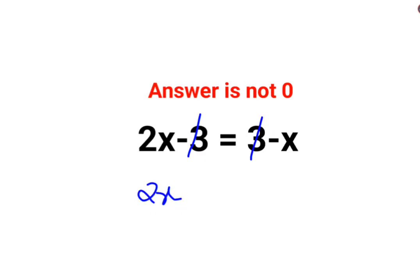So 2x is equal to what? Just x. So this and this also gets cancelled. That cannot be cancelled, right?